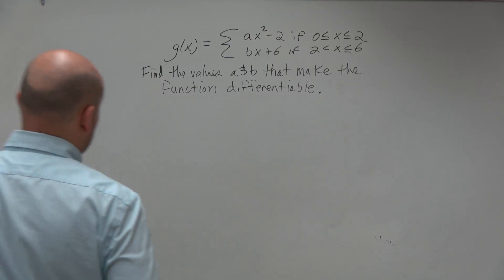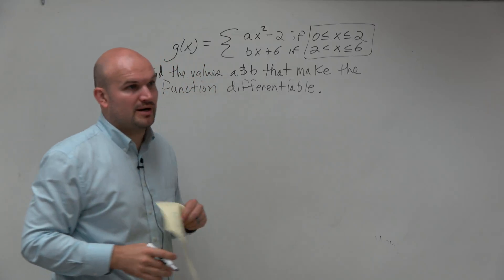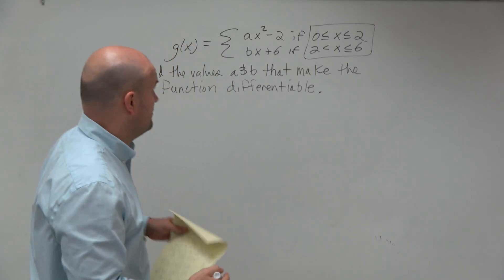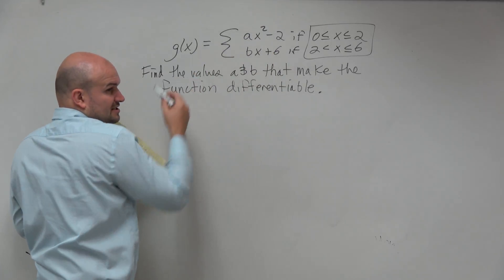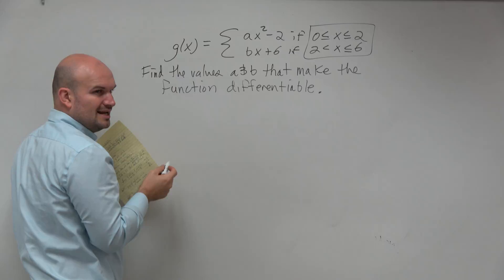I'm seeing some people getting stuck with the same thing. First of all, we haven't looked at constraints, hence one of the reasons why I wanted to do a problem like this. The constraints are a little bit different. Now, we know that this is a quadratic. We have no idea what the quadratic looks like, and then we know this is some kind of line.